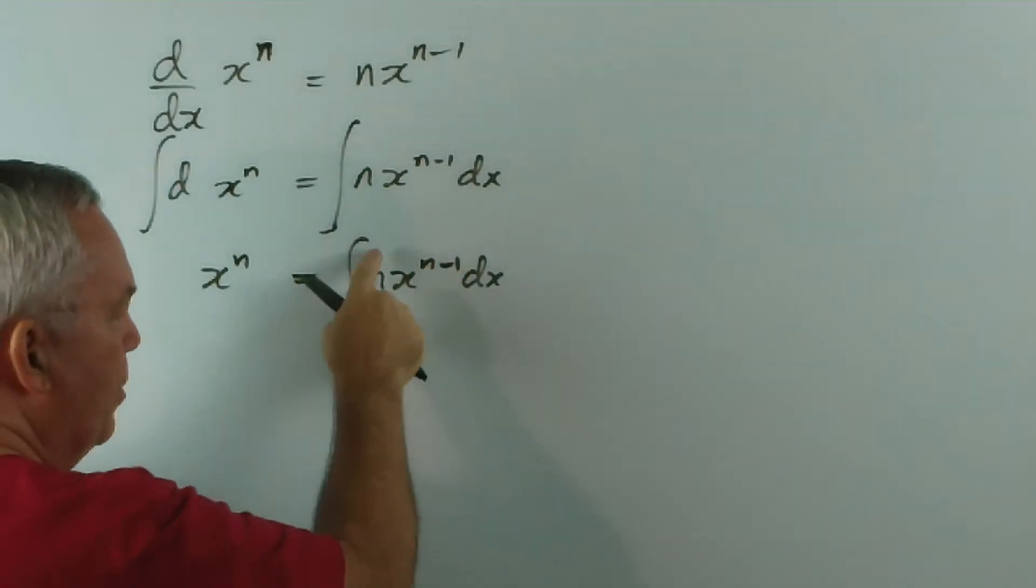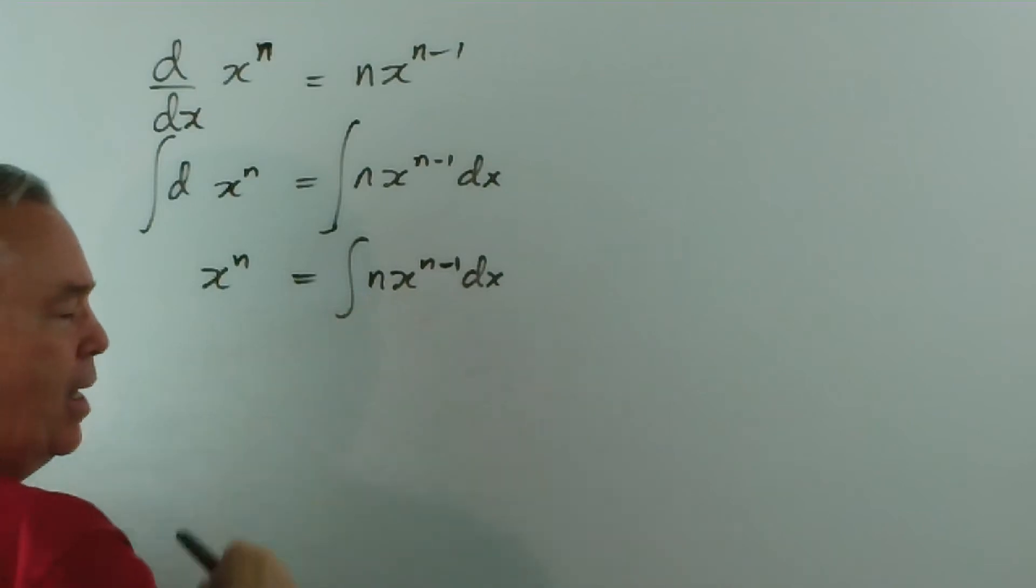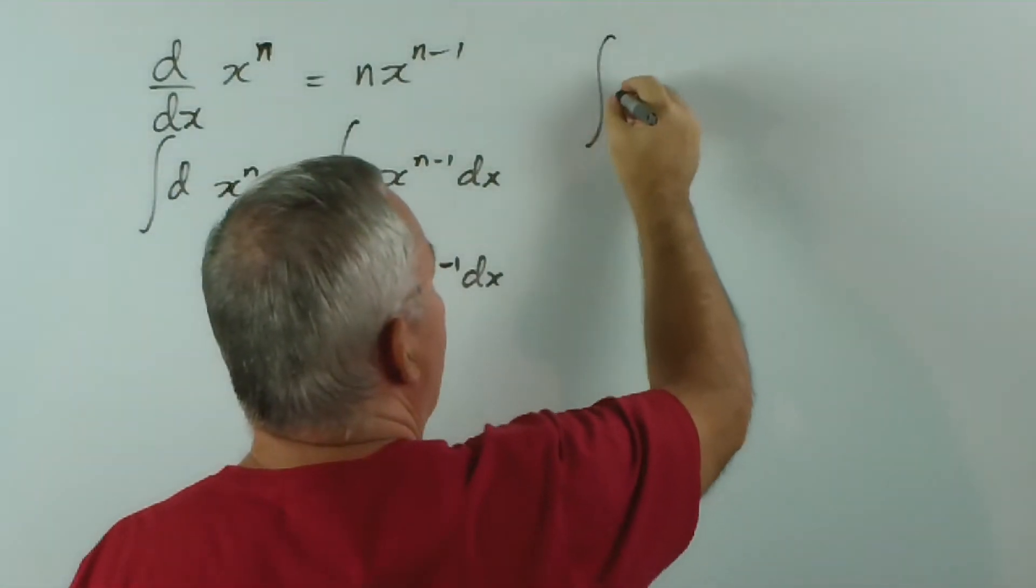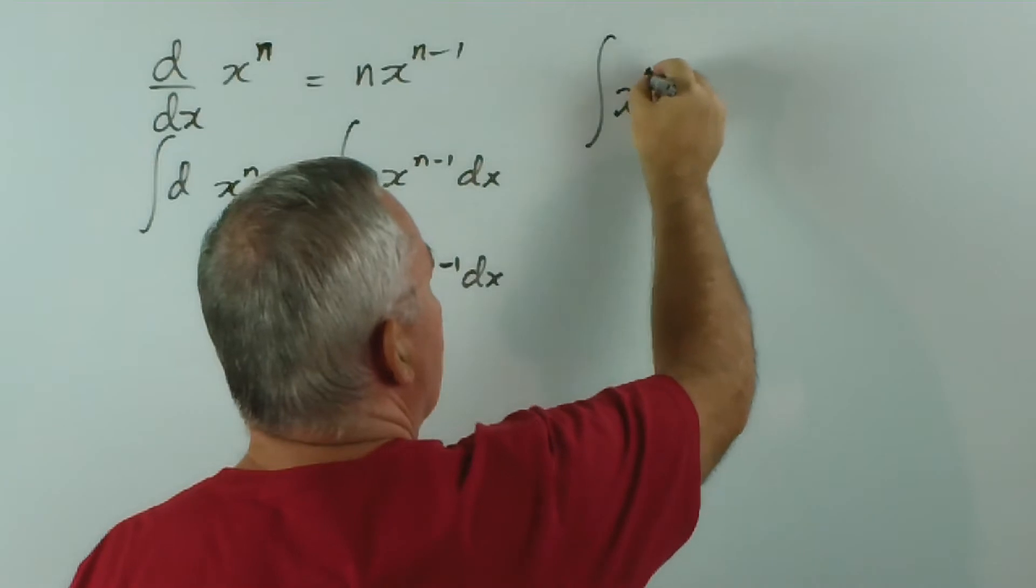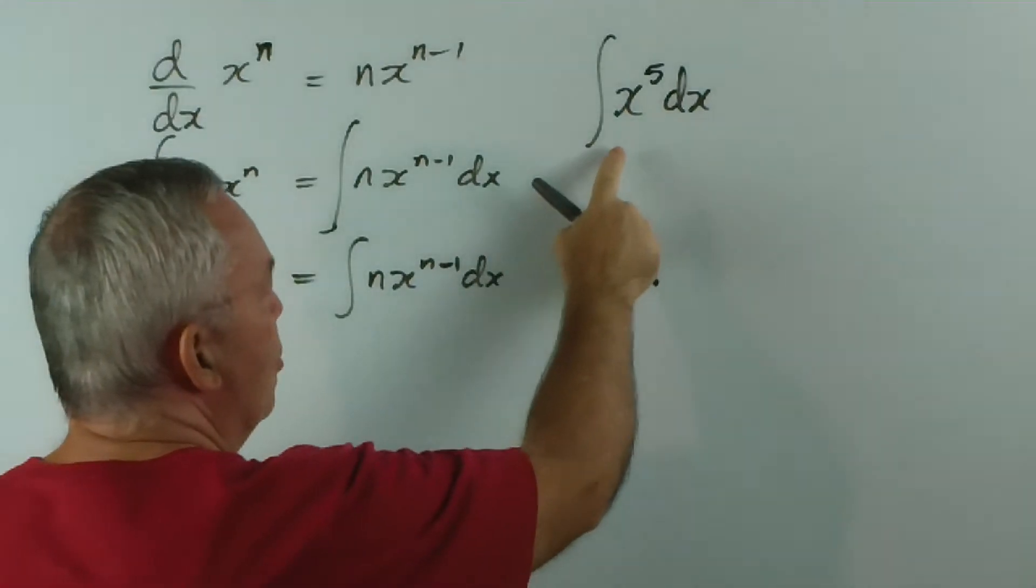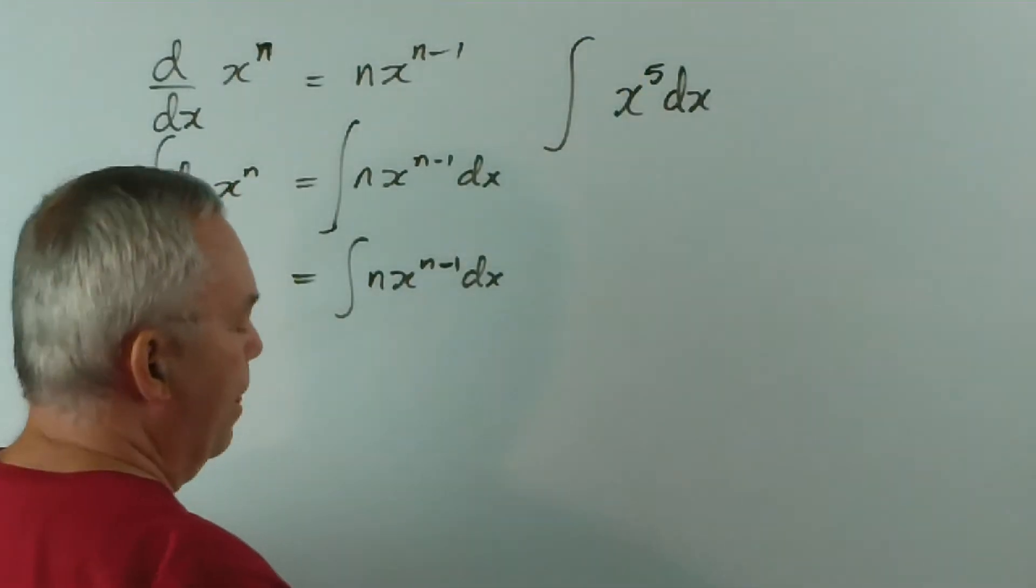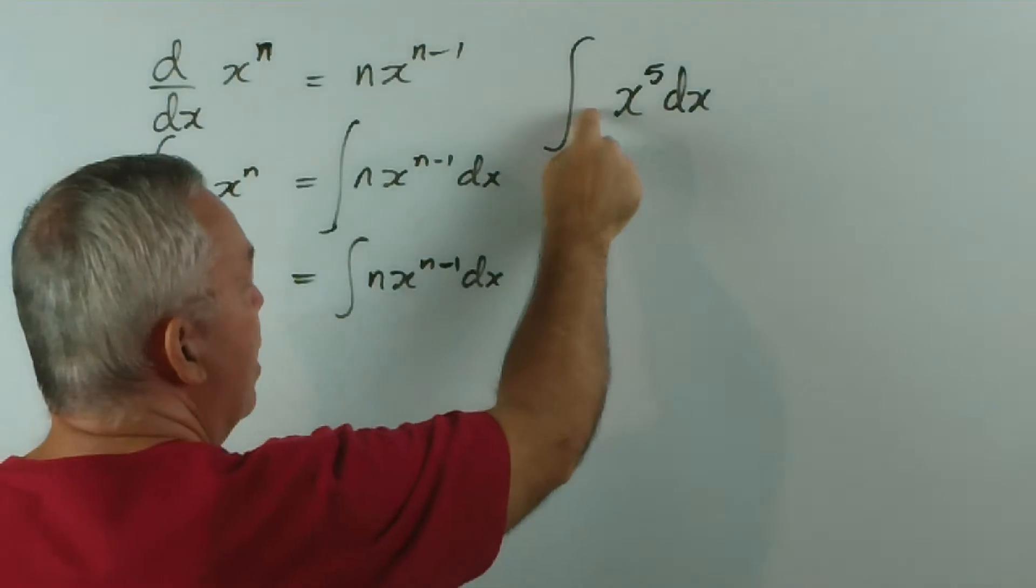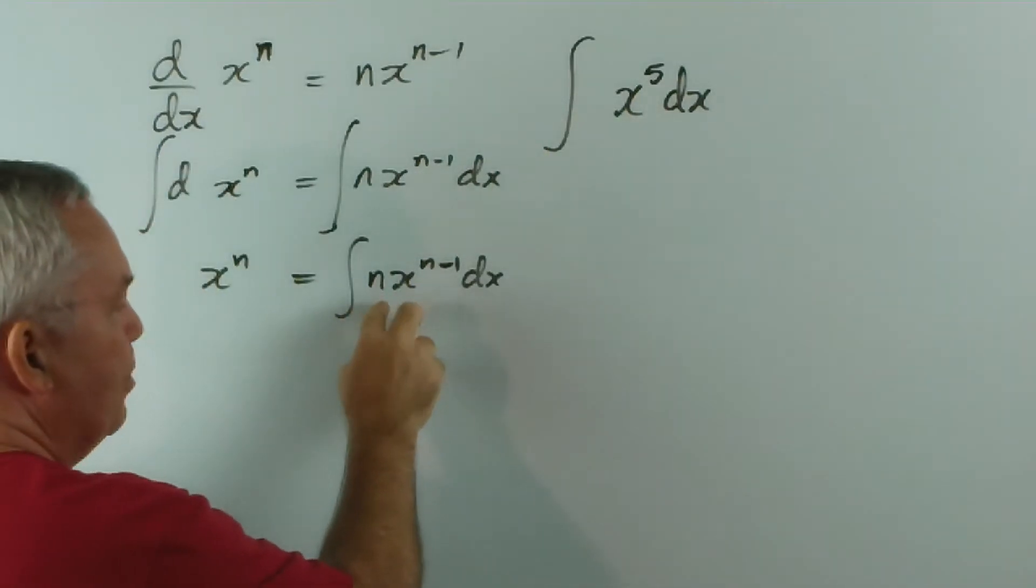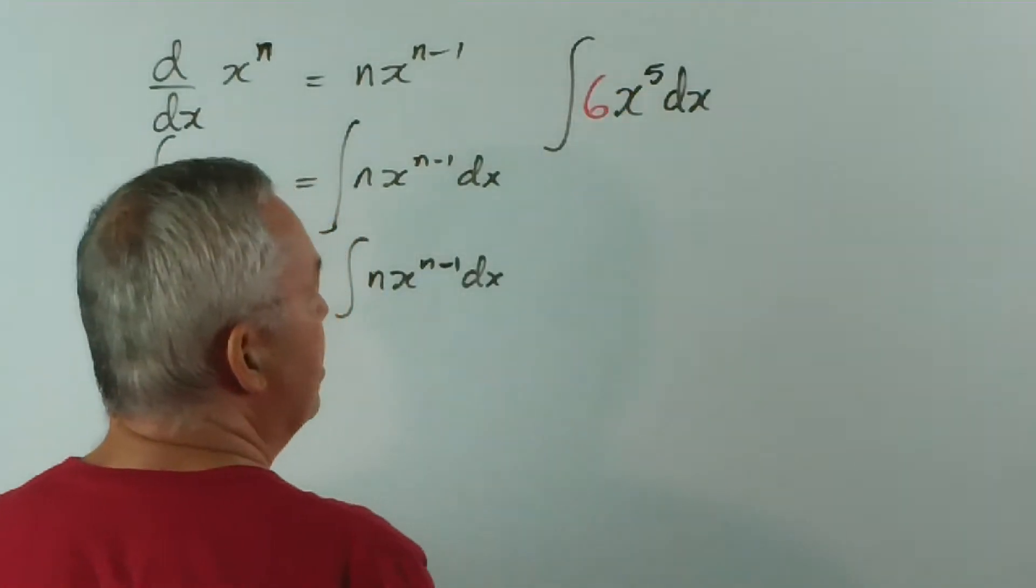Now, I'll illustrate how this is used. We try, when we're asked to integrate some function, which is x to a power, to produce a number that is one greater than this, because this is obviously one less than that. Let's illustrate. If I was asked to integrate x to the power of 5 dx, what I would try to do is create a number in front, which is one greater than this.